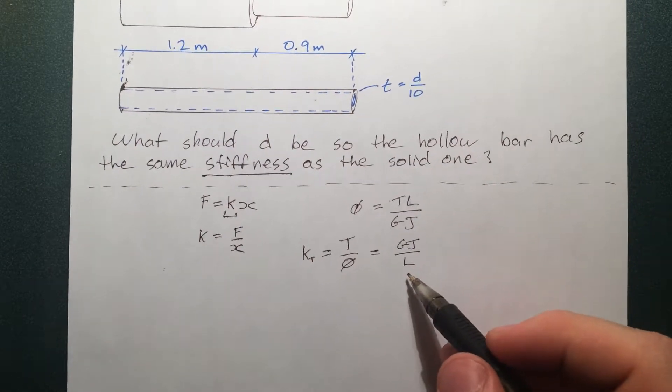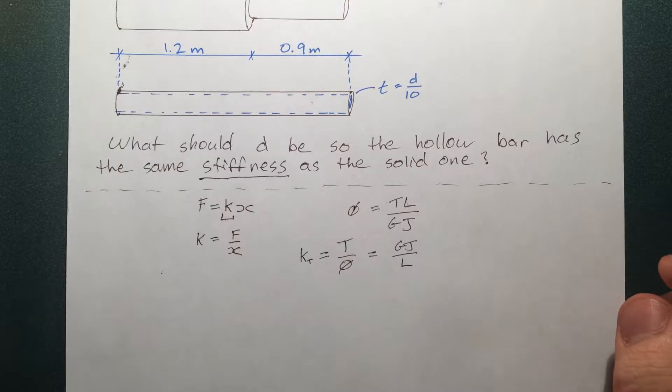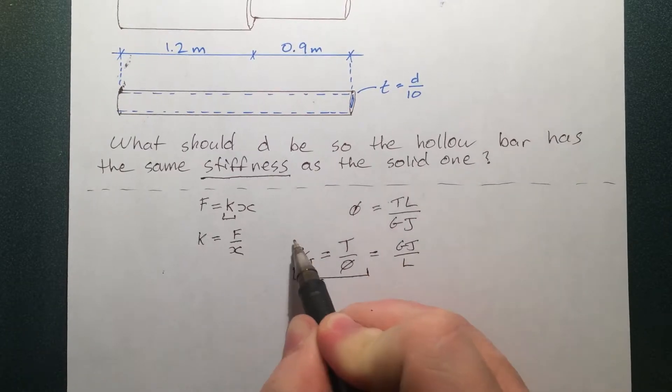And it's inversely proportional to the length. Also makes sense, the longer something is, the more twist you'll get out of it. But for this question, we're just going to look at this piece right here.